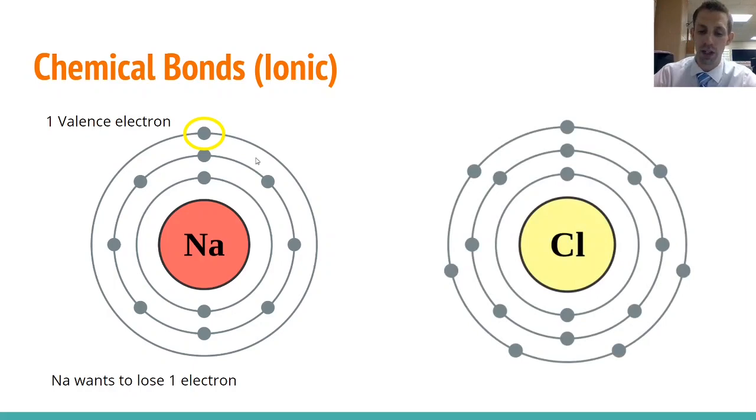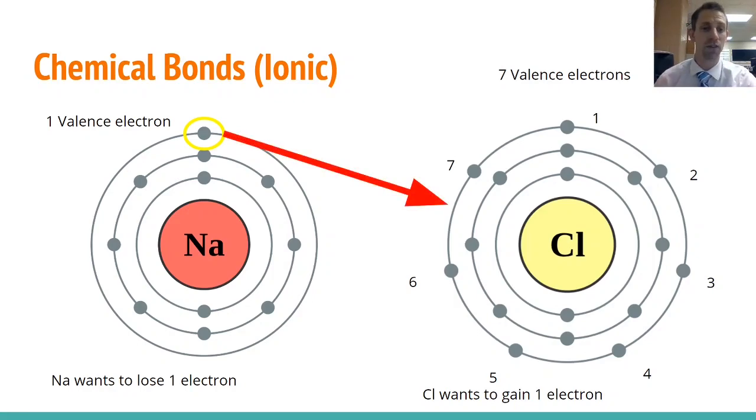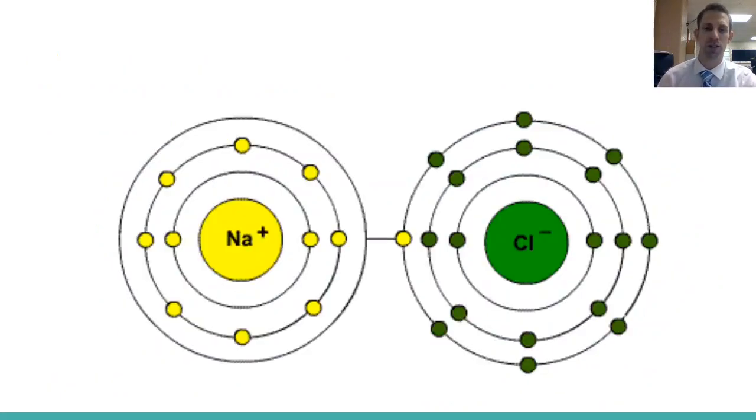Here again is that same model of sodium with one valence electron. Sodium's choices are gain seven or lose one, and pretty clearly it's going to be easier for sodium to lose one. That's what it will try to do to make its outermost level the second level, which would then be full. Now look at another element, chlorine. Chlorine has seven valence electrons. Chlorine is in a similar situation where it can either gain one or lose seven. Losing seven seems like a lot, so chlorine would prefer to gain one. This is the beginnings of how we form what's called an ionic chemical bond.